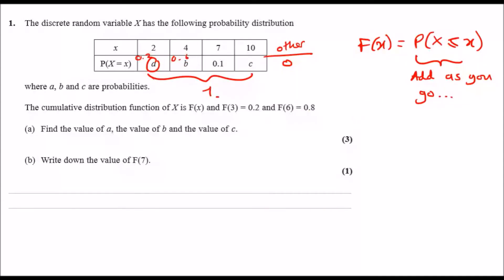Now a is done. So write down the value of F(7). F(7) just means you add along, so it'll just be a plus b plus 0.1, which will equal to 0.9. And of course c must be 0.1, because adding all these probabilities will give us 1. And that's it guys, that's literally the end of the question.